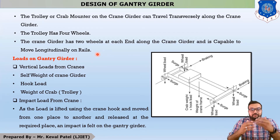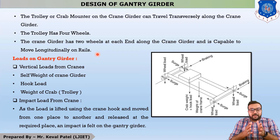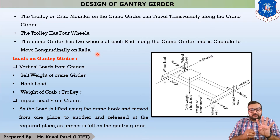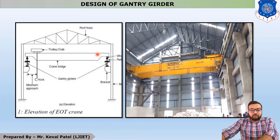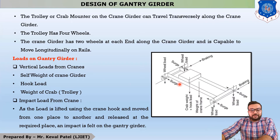Now we are moving further to the loads on gantry girders. Basically, there are four types of loads which we calculate when designing a gantry girder. The first load is vertical load. In vertical load, let us discuss with the help of this figure. You can see that the first component of vertical load is the self-weight of the crane girder.